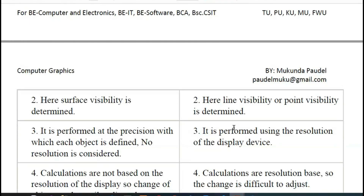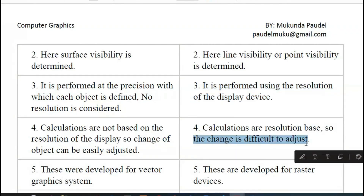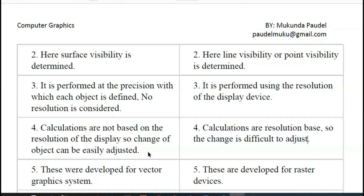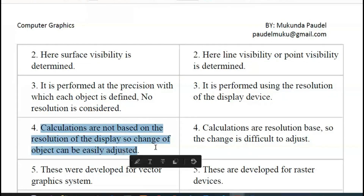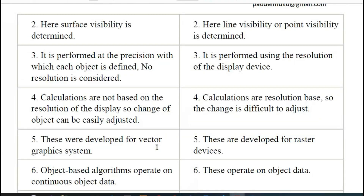If you have a pixel calculation or a visibility to determine, then it depends on the resolution of the device. If you have a higher resolution of the device, then you have more precision on the visibility. What does the image space method mean? It depends on the device — with a different device, the resolution calculation is difficult. What does the object space method mean? It depends on the resolution.